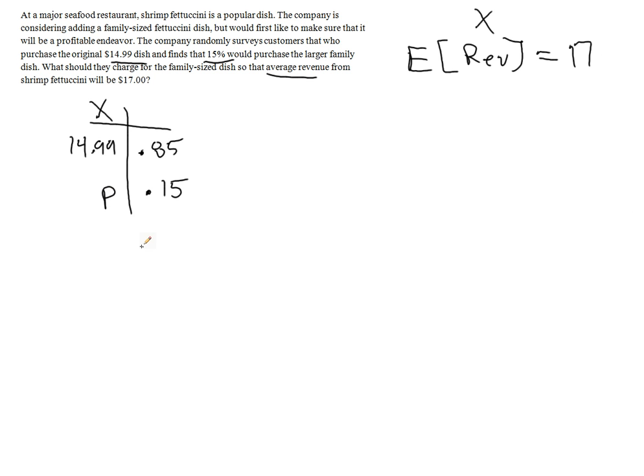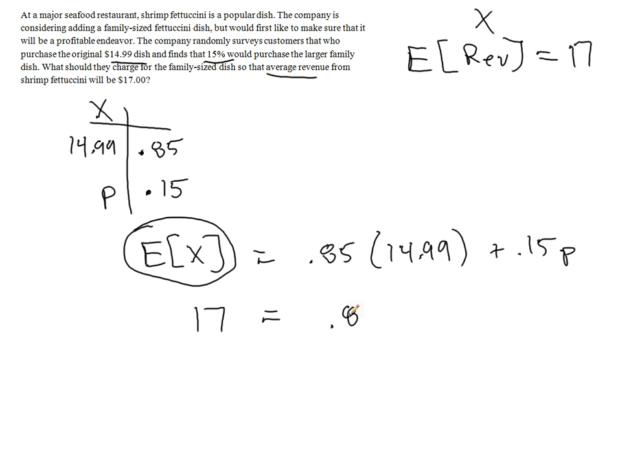So expected value I know is the probability times the price plus the probability times the price, which in this case is unknown, so we put a P in the place. Well, this expected value I know I want to be $17. So I'm going to replace the expected value with 17, and now I see that I have a fairly simple linear equation to solve.